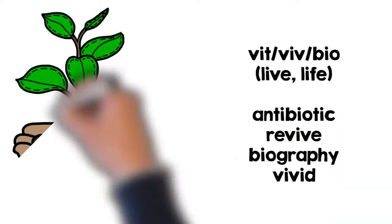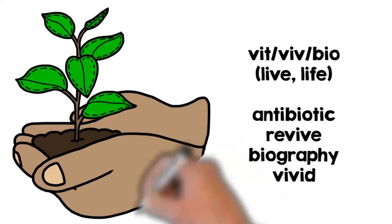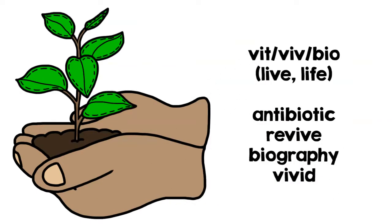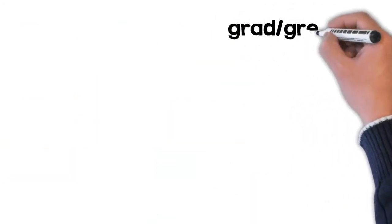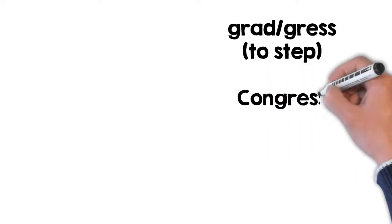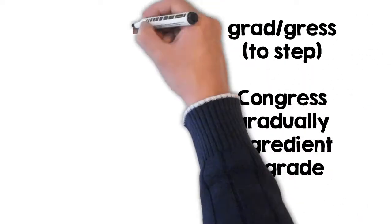The root word grad and gras means to step. Some words containing this root include congress, gradually, ingredient, and upgrade.